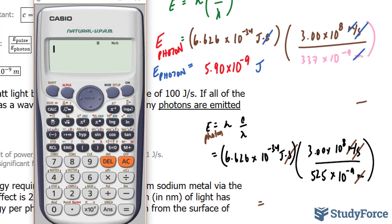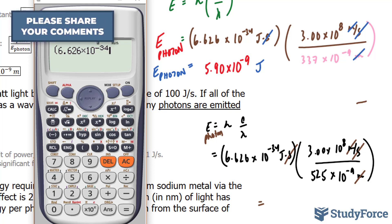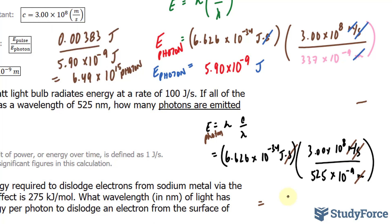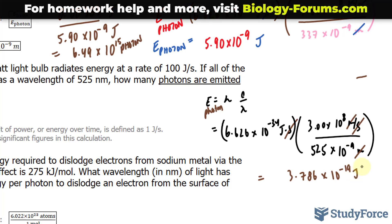Let's go ahead and find out the answer. Starting with 6.626 times 10 to the power of negative 34 times 3.00 times 10 to the power of 8 divided by 525 times 10 to the power of negative 9, we end up with 3.786 times 10 to the power of negative 19 joules per photon.